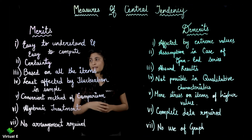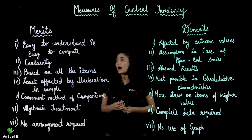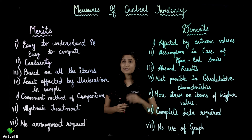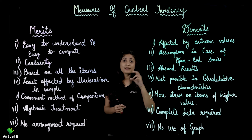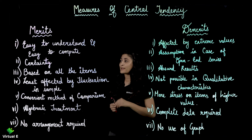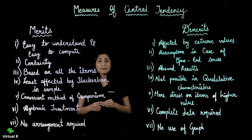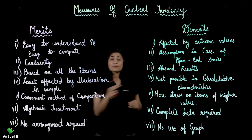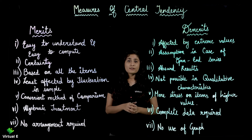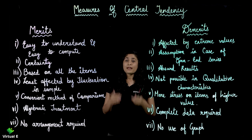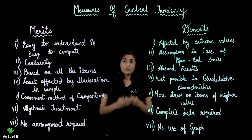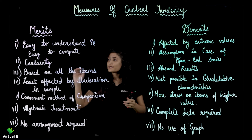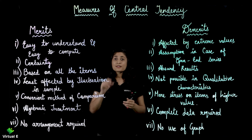The next merit is certainty. Our mean is rigidly defined — we have discussed this a few times. It is based on formulas and rigidly defined because it gives us the same answer with all the methods. Whether I calculate it or you calculate it, the answer is the same. So that is why it is known as certain — it gives us certainty.